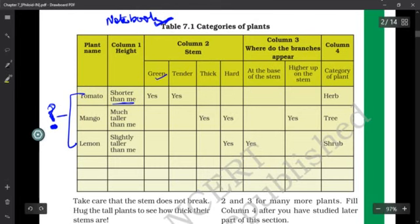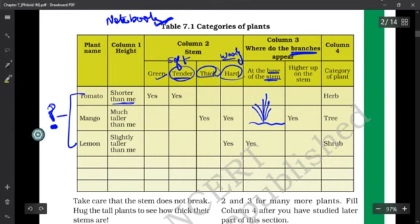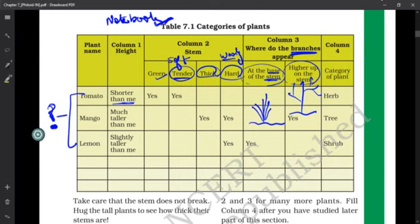You need to observe their stem - is it green and tender, which is soft, or is it thick, hard, and woody? Second thing, write about their branches - are they coming at the base of the stem, meaning near the soil, or do the branches come out higher up on the stem?